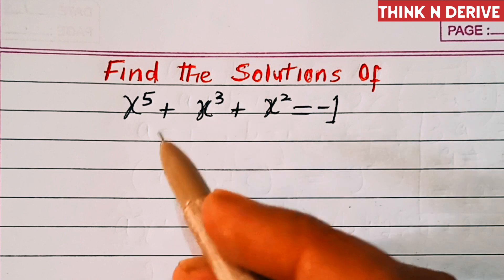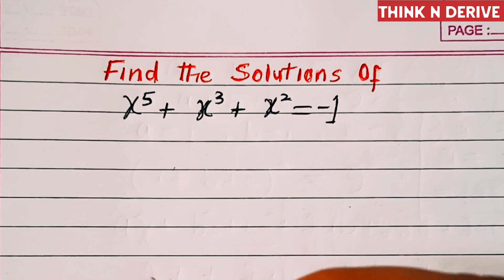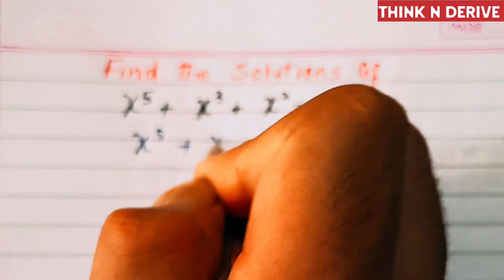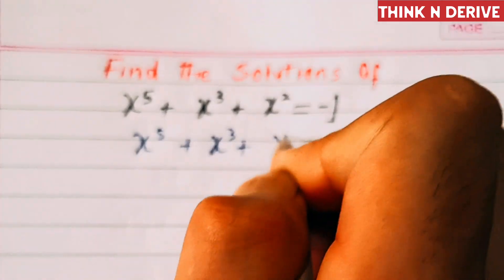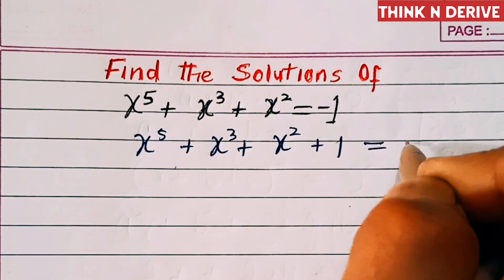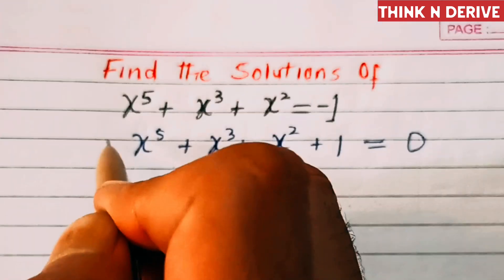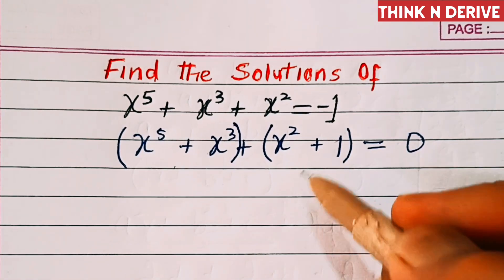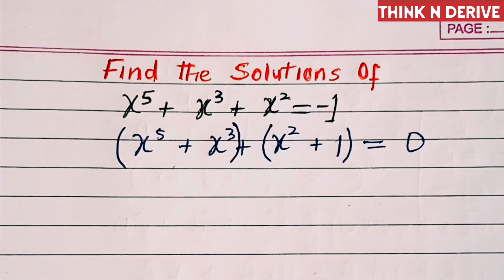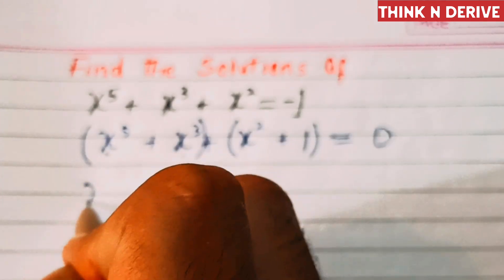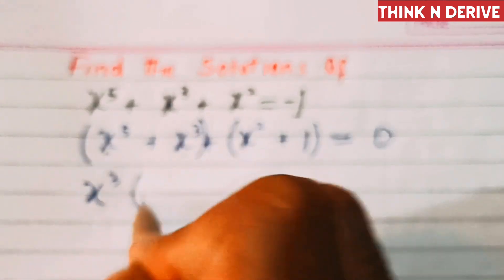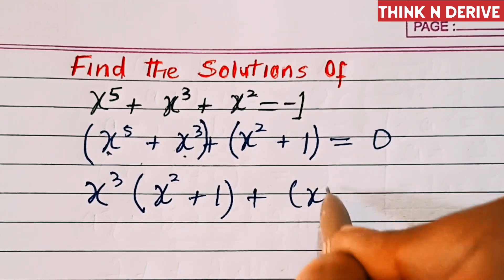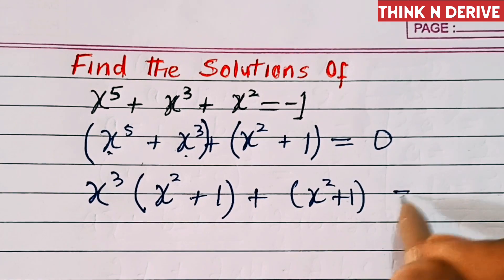First of all, we will move the minus 1 to this side. So this equation will look like x⁵ + x³ + x² + 1 = 0. Now, take these in brackets. From the first two terms, we will take x³ common, so here remains x² and here remains 1, plus x² + 1 = 0.